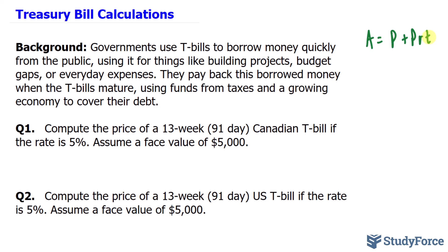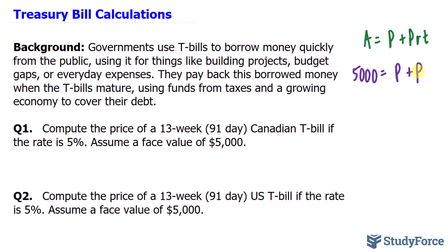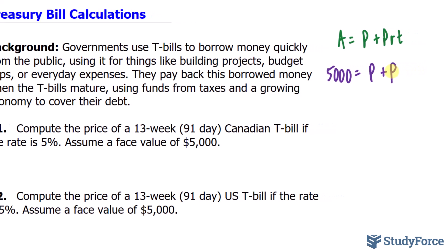The amount we will be receiving is $5,000, so A = $5,000. P is what we're looking for, so P will be left blank in both terms. The rate is 5%, so we'll replace R with 0.05.